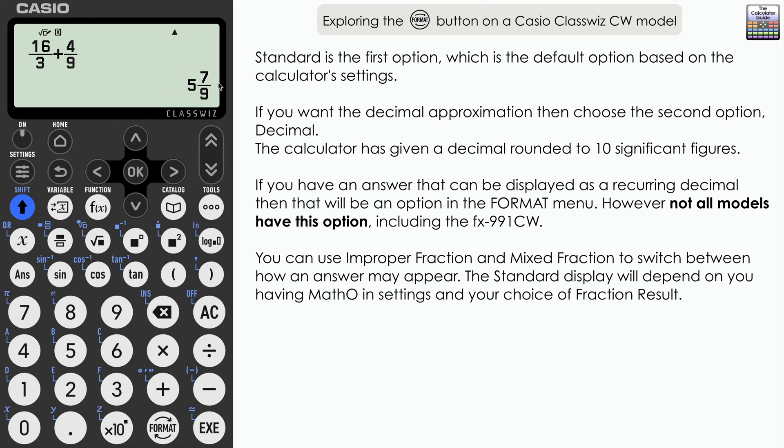And that's essentially a mix of an integer value five, and then a fraction part as well, seven over nine, five and seven ninths. And you could have in your settings, if you had your fraction result as a mixed fraction, you would have this initially as your standard. And then what you could do is to press format and select improper fraction. We can do that now to switch back 52 over nine.